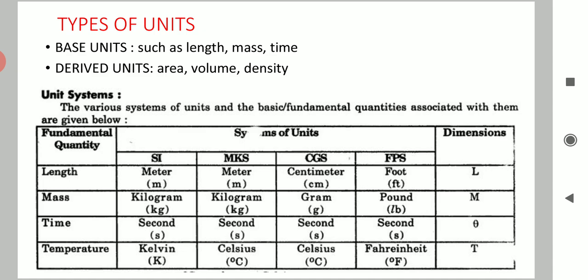Coming to the main topic, it is units. Units are of two major types: base units and derived units. Base units are the standard units which are fundamental, such as units of length, units of mass, and units of time. For example, unit of length is centimeter, meter, or kilometer; unit of mass is gram or kilogram; and unit of time is second, hour, or minute. These are the base units, and from these base units we can derive other units too.